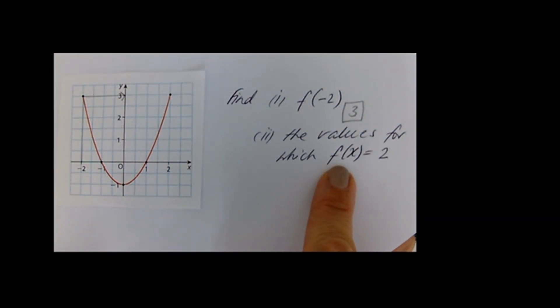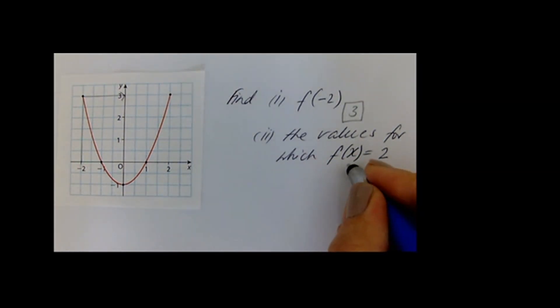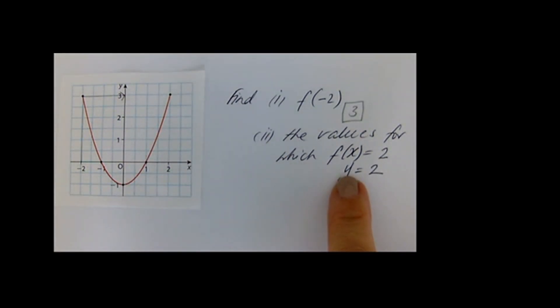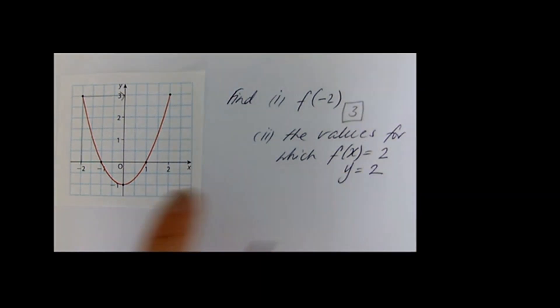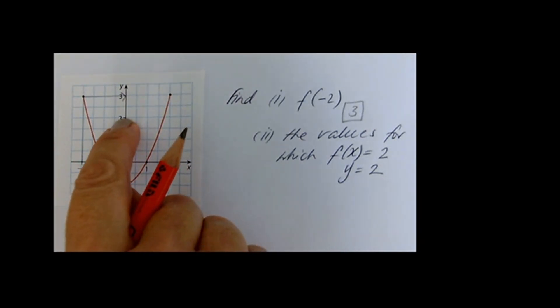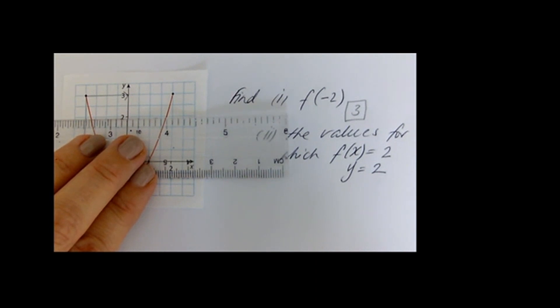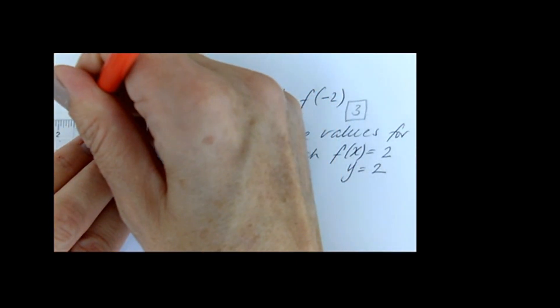In this question, find the values for which f of x is equal to 2. Given that f of x is equal to 2, another way we can write that is y is equal to 2. Therefore we're going to go to y is equal to 2 on the y axis — there's 2 — and this time we will draw a horizontal line. Wherever it meets the graph — it meets in two places — we're going to read off the x.